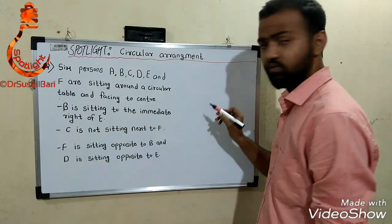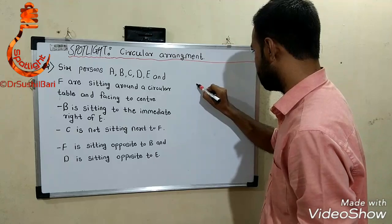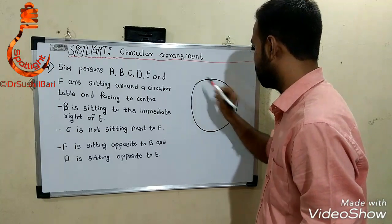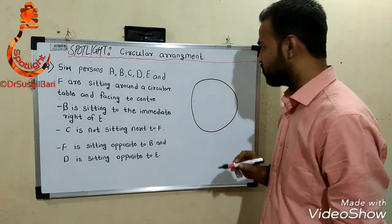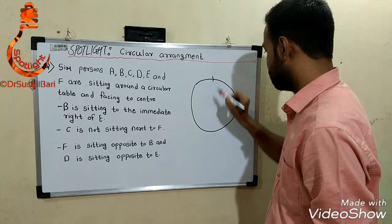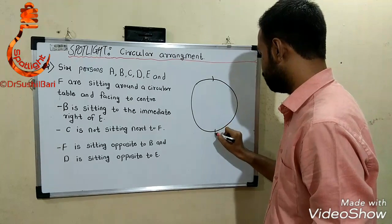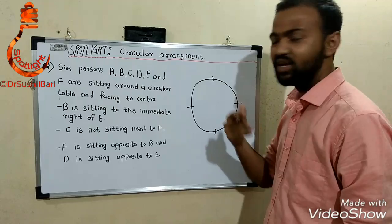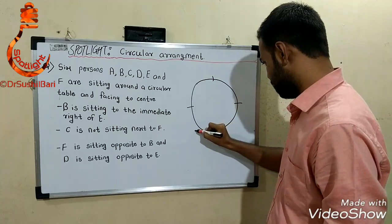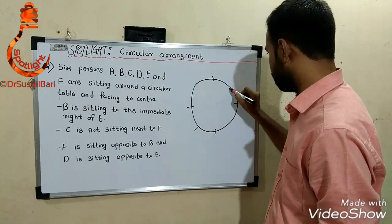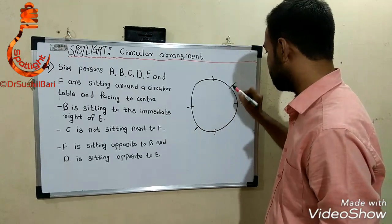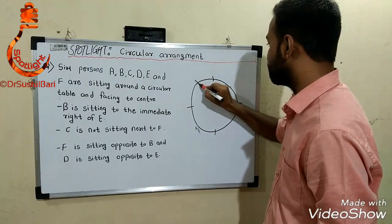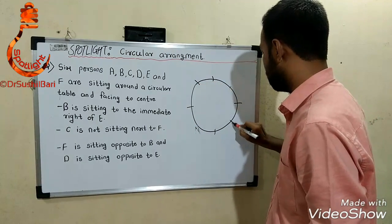Since there are six persons, we draw a circle and mark six positions — one, two, three, four, and the remaining two. You can draw them evenly spaced around the circle like this.